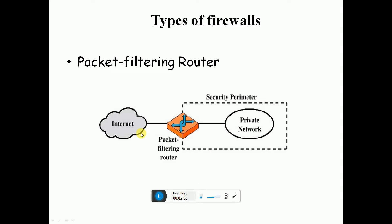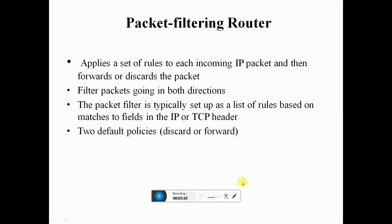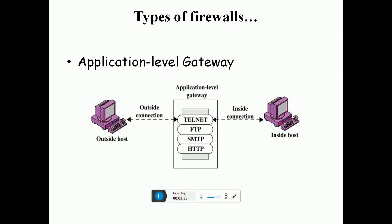The type of firewall — packet filter firewall router: this is the internet, and packet filter routing provides security. This is a private network — our office, business center, or organization. Packet filter routing applies a set of rules to each incoming packet and then forwards or discards the packets. The filter applies to packets going in both directions. The packet filter is typically set up with a list of rules based on match fields such as IP or TCP address. The two possible policies are discard or forward.